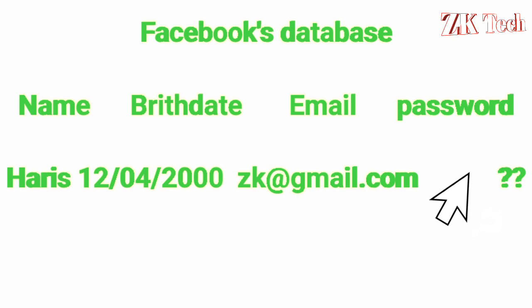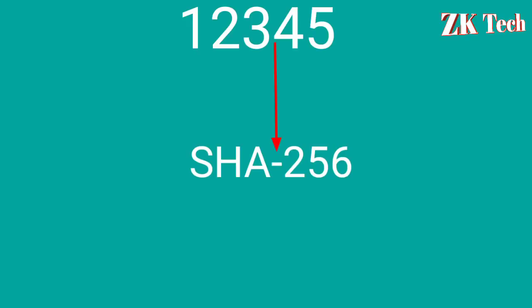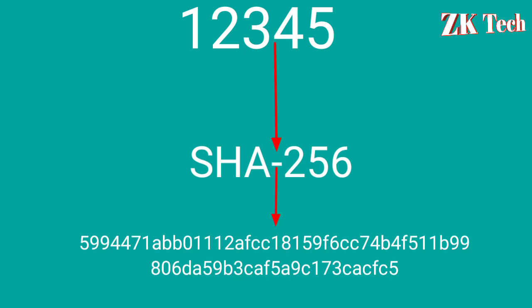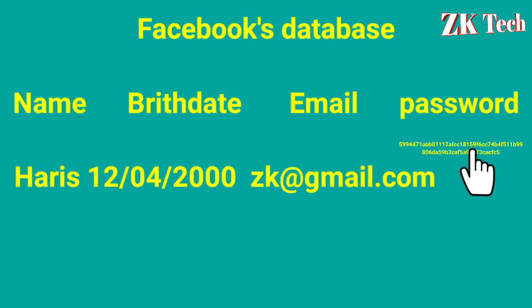But what about the passwords? As I already told you, passwords will never be saved as plain text in the website's database. So the password is given as input to the hashing algorithm, and the output is the encrypted form of the password, which appears to be random but is not. This hashed password is saved in the Facebook database — not the plain text password.